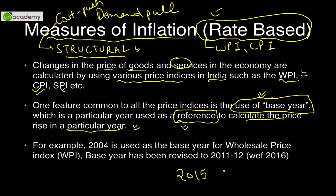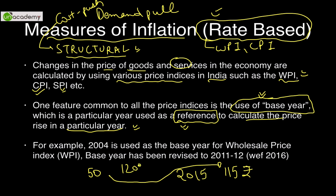...if a one-liter juice bottle is 115 rupees now, and the base year 2004 price was 50 rupees, that represents approximately a 130% rise in prices — that is the inflation vis-à-vis the base year 2004. For WPI, 2004 was used as the base year until it was recently revised to 2011-2012.